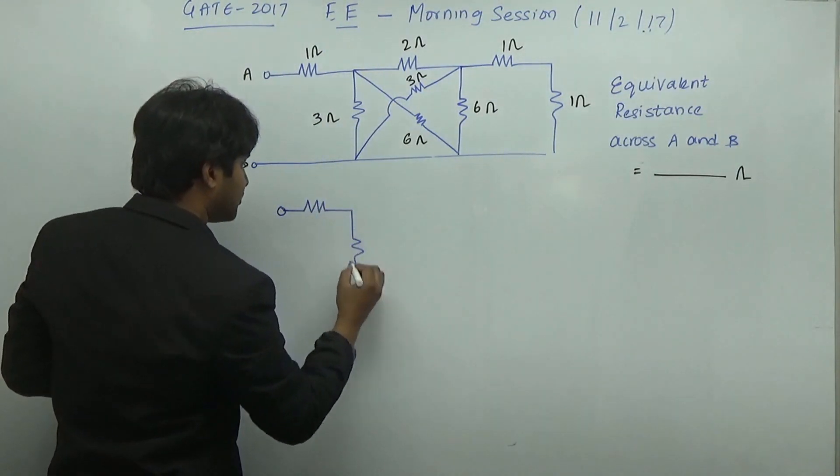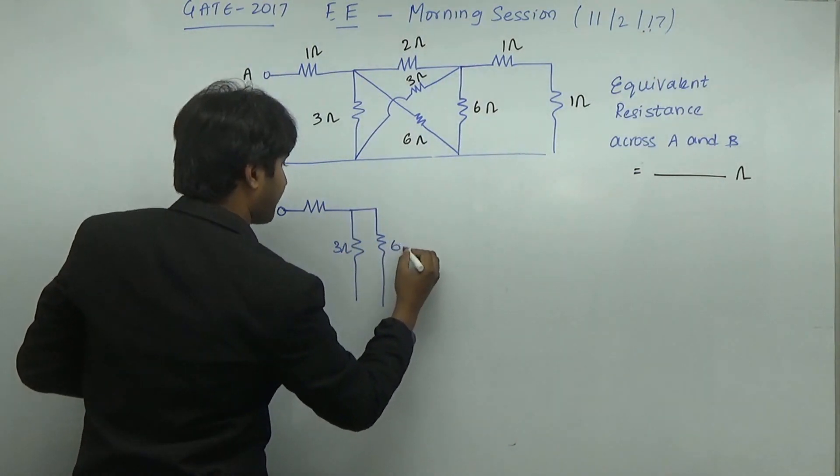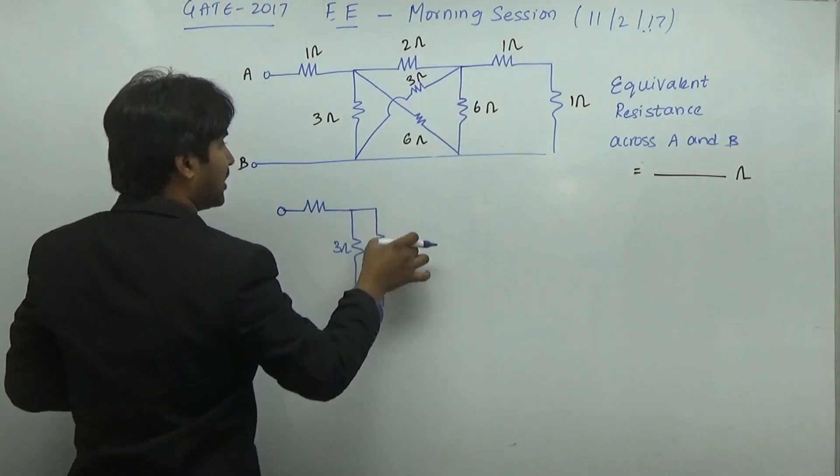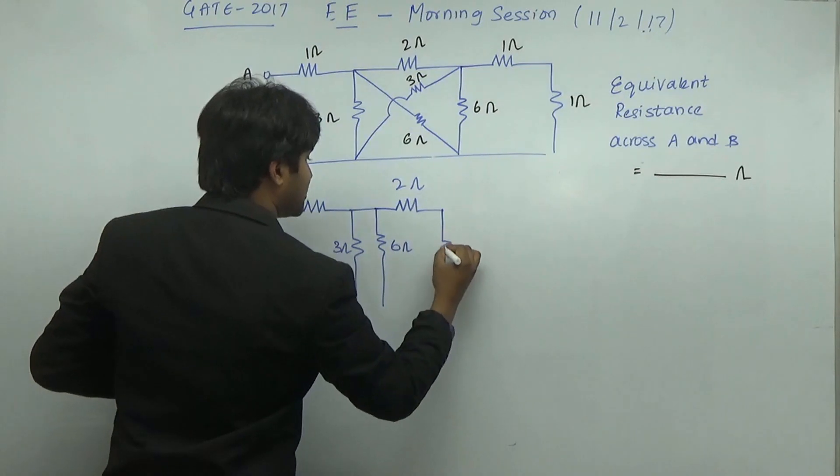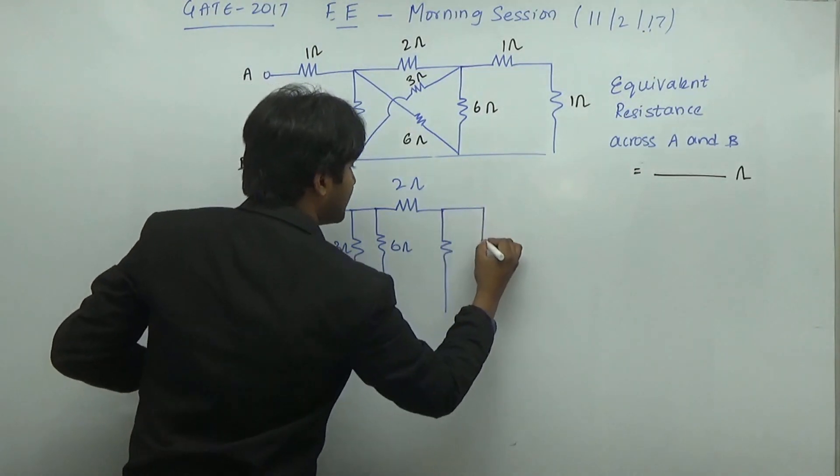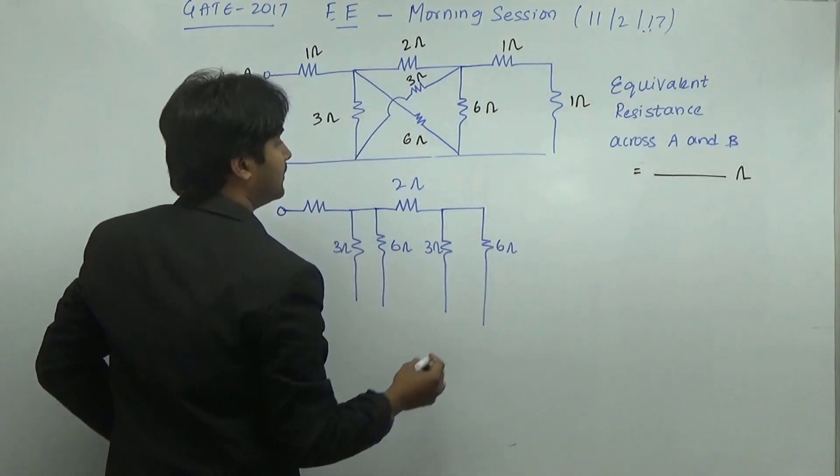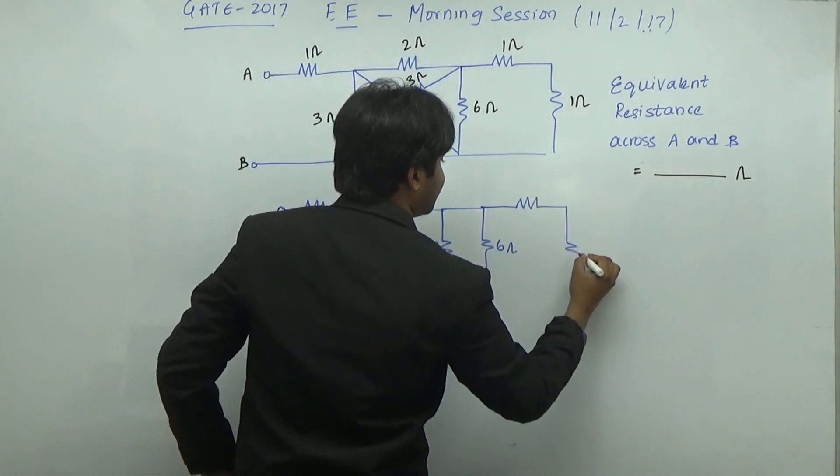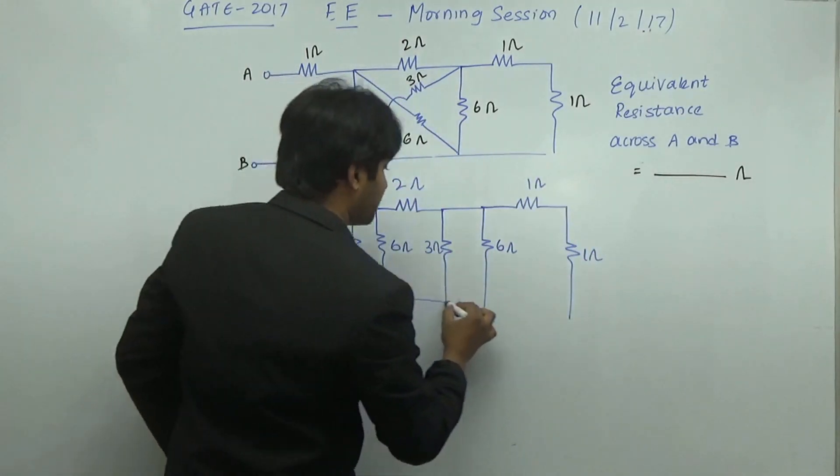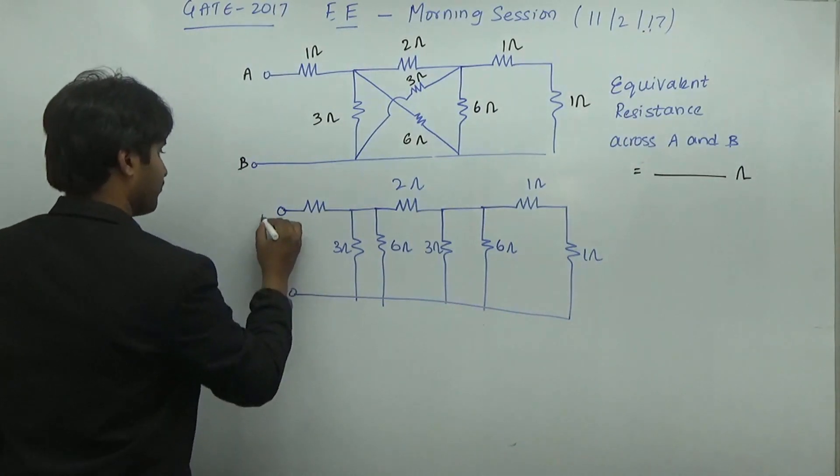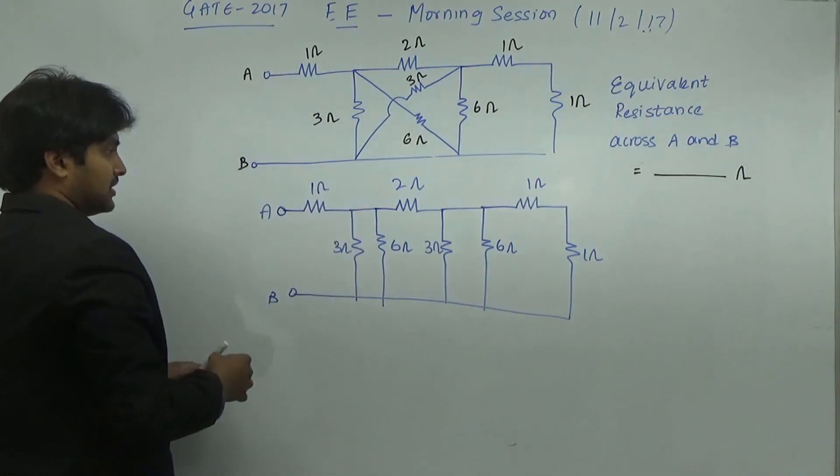So you can have a circuit of 3 ohms and 6 ohms in parallel. This particular resistance is going to come here. And I am going to have a 2 ohm resistor. And now I have a 3 ohm resistor and 6 ohm resistor in parallel. And of course I have a 1 ohm and 1 ohm respectively. Now this is going to be a very simple circuit.